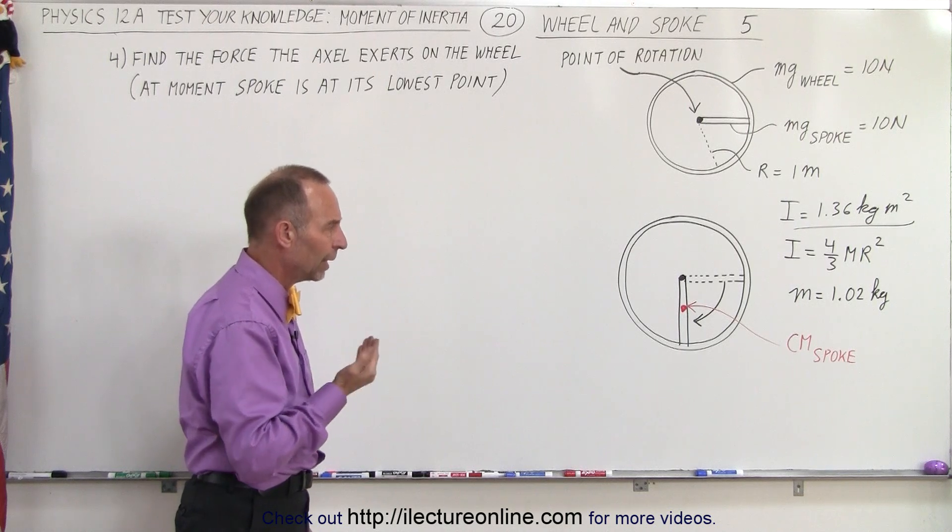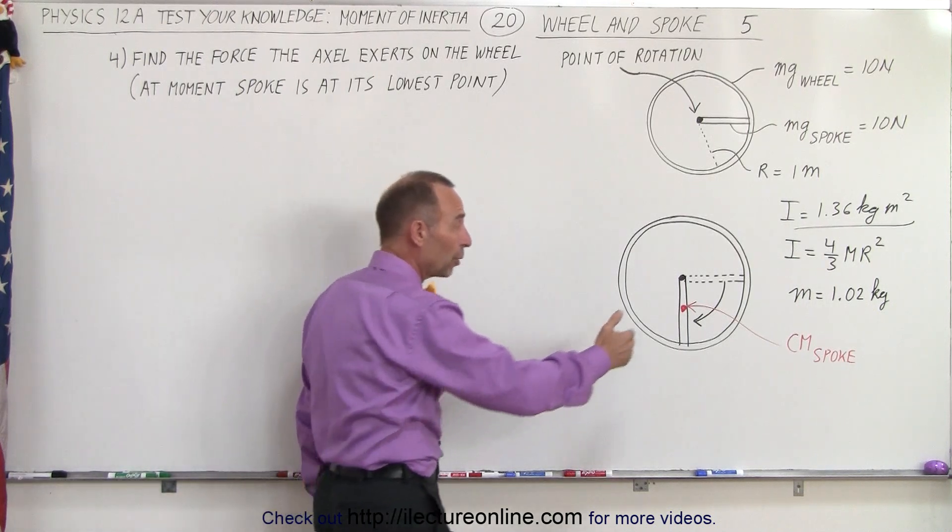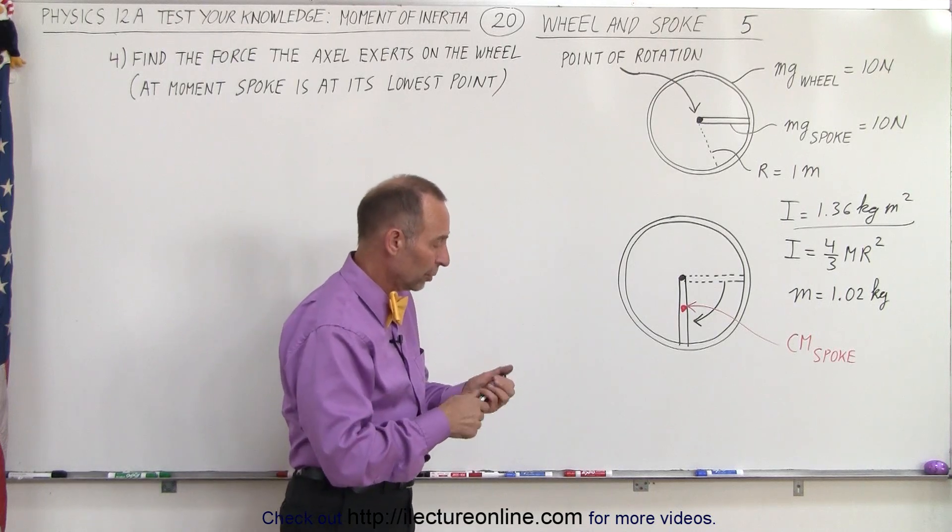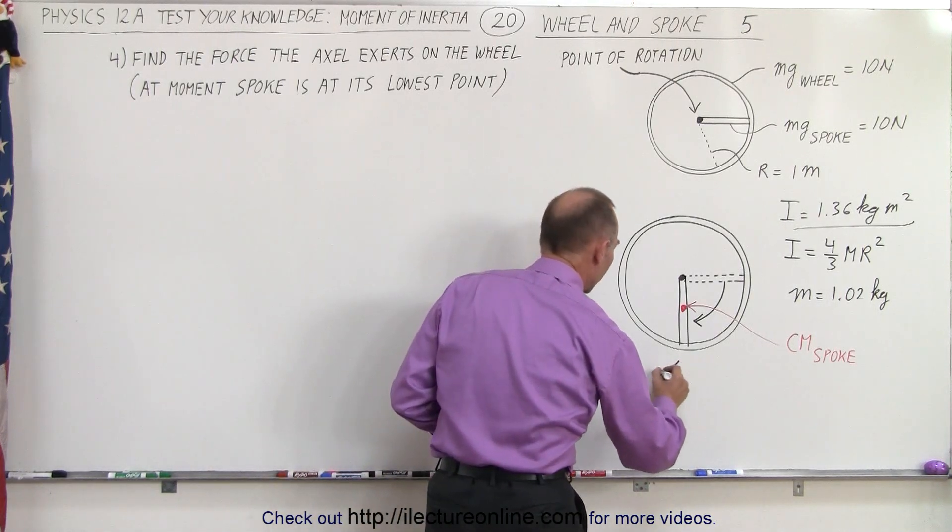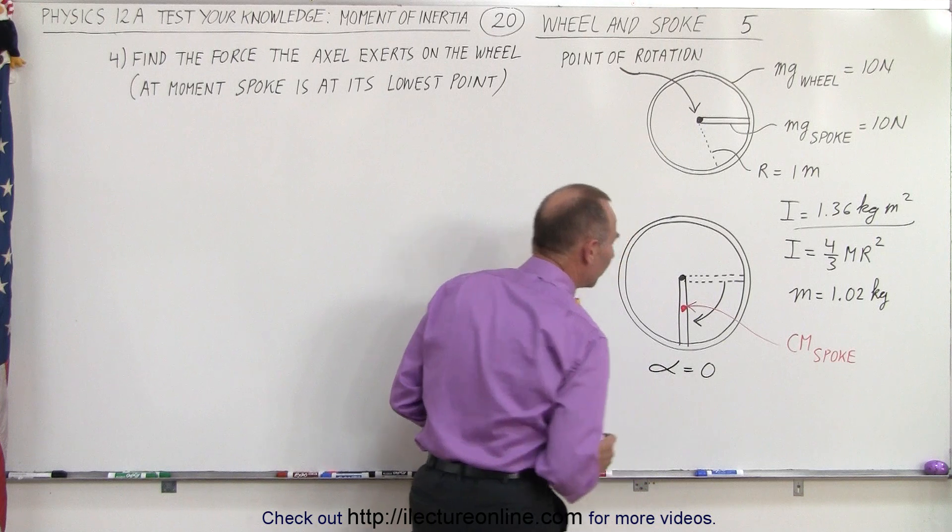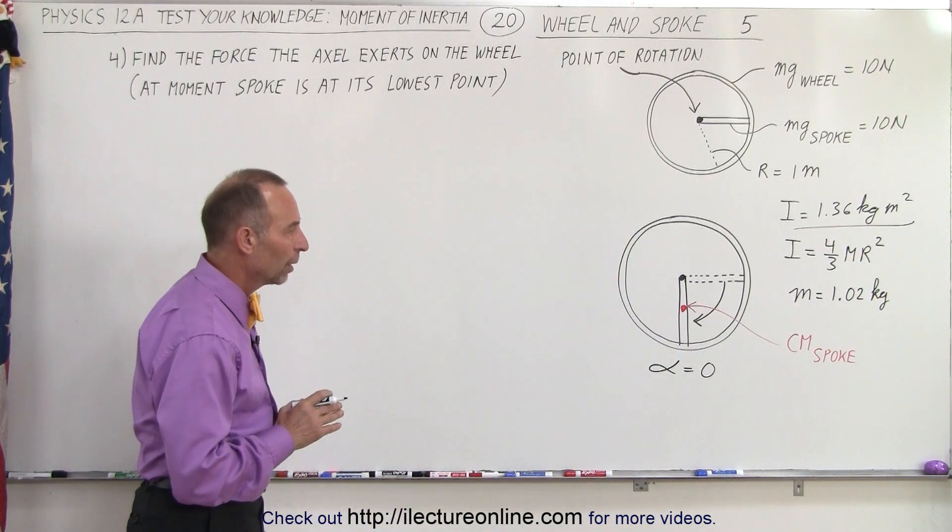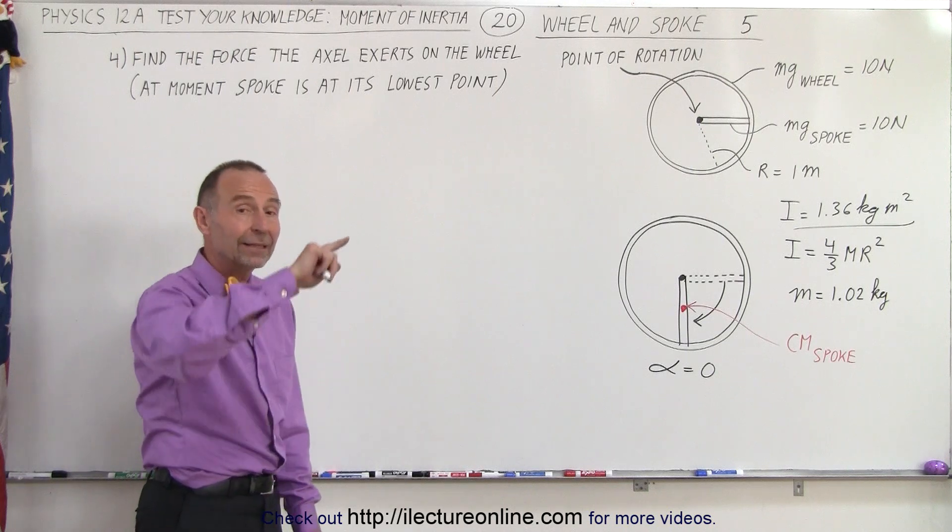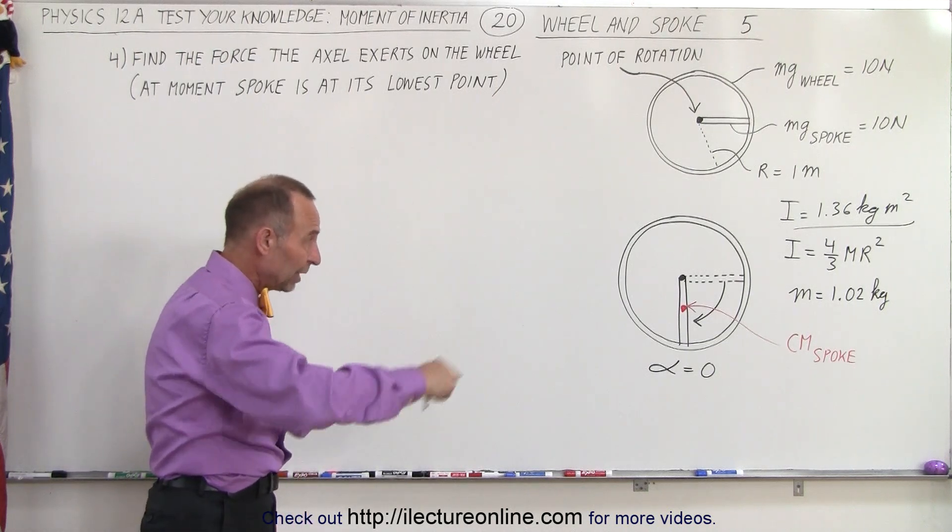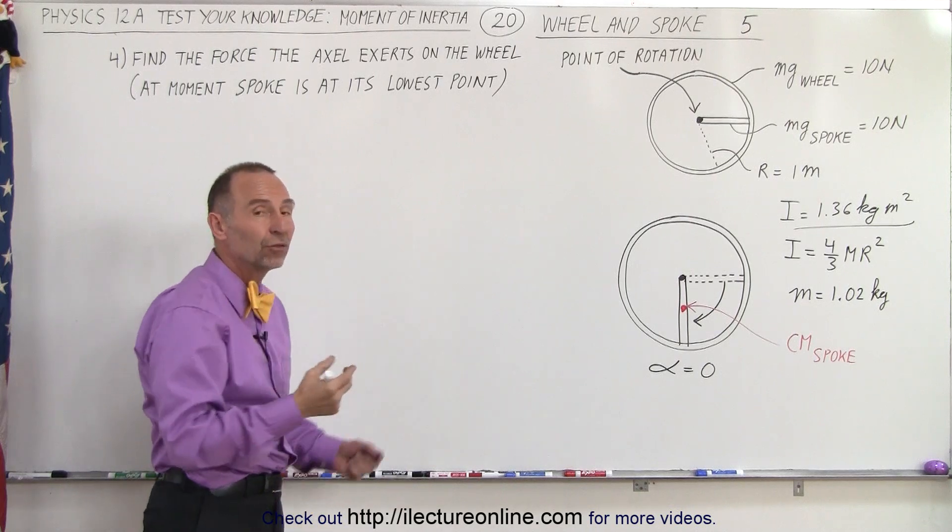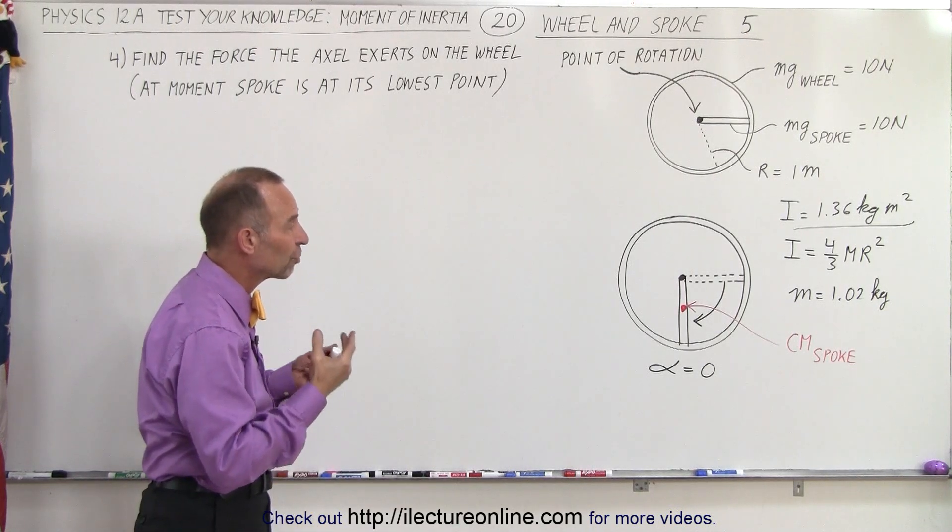So how do we do that? Well, the same kind of principle applies. First of all, when the spoke is all the way at the bottom, the net torque at that moment in time is zero, which means that the angular acceleration is equal to zero. So we don't have to worry about that portion of it, but we do have to worry about the fact that the wheel is rotating, so the spoke is moving, and we're going to experience a centripetal force.